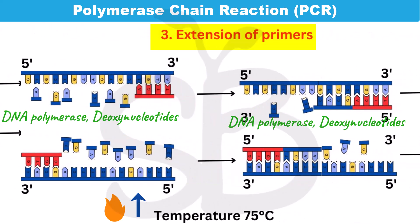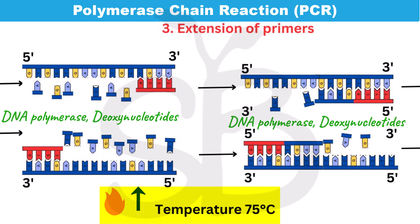Extension is the third step. The temperature is raised to 72 to 75 degrees Celsius, which is the optimal temperature for Taq polymerase. The Taq polymerase enzyme binds to the end of the primer and adds nucleotide triphosphates — dATP, dGTP, dCTP, dTTP — in a complementary fashion, following Watson-Crick base pairing: adenine with thymine, cytosine with guanine. The two strands are extended to synthesize new DNA.